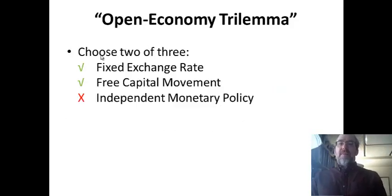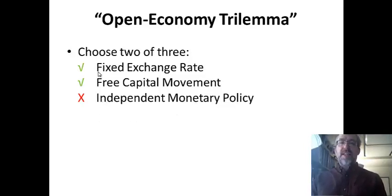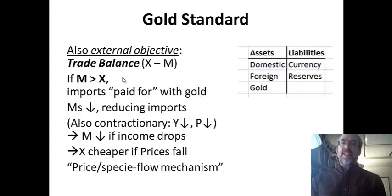From an international perspective, there is the open economy trilemma — sometimes called the unholy trinity — where you choose two of three: a fixed exchange rate, free capital movement, and an independent monetary policy. Under the gold standard, there was no independent monetary policy. Countries fixed their exchange rates, and gold was allowed to move around the world — you could ship it. So capital could move, exchange rates were fixed, but countries actually had no control over their monetary policy.